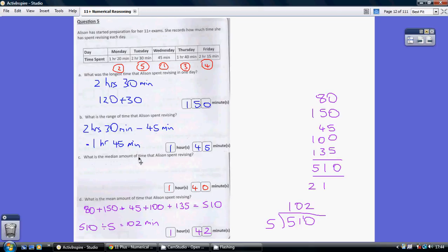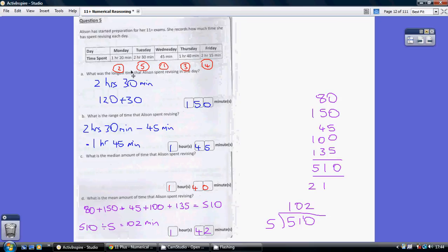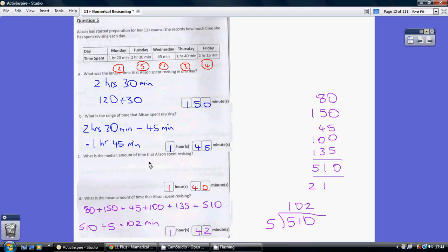Part C: what is the median amount of time that Alison spent revising? Well, median is the middle one, so let's put them in order of the length of time. That was the shortest, 45 minutes; 1 hour 20 was second; 1 hour 40 third; 2 hours 15 fourth; 2 hours 30 fifth. So we've got 5 things here, 5 days she revised, so we want the middle one, the third one - 1 hour 40 minutes.